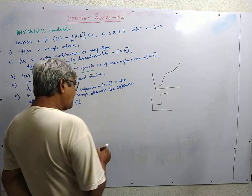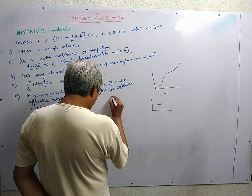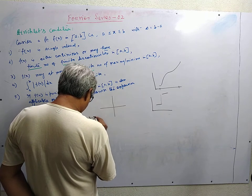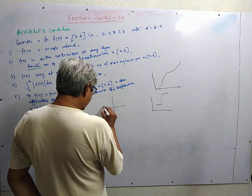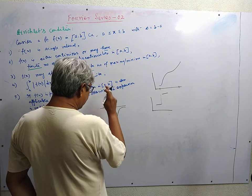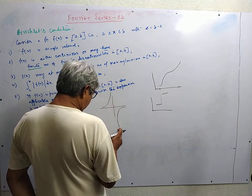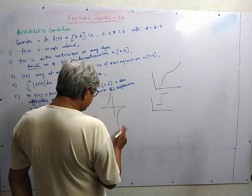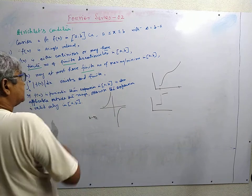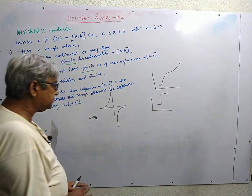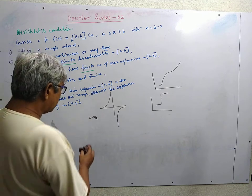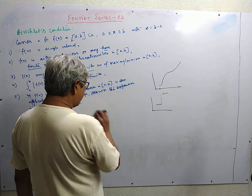On the other hand, if we consider the tan function around x equal to pi by 2, the right hand limit tends to plus infinity and the left hand limit tends to minus infinity. So the discontinuity is an infinite amount. By finite discontinuity we mean the amount of discontinuity is finite. Then comes the number of discontinuities.